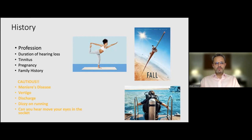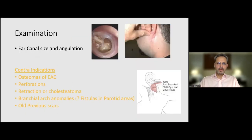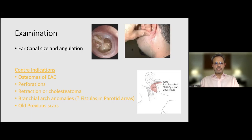If the patient has any symptoms that can give rise to vertigo or dizziness, I would treat it with caution and probably not consider performing a stapes operation because of the long-term risks associated. In examination, it is very important to look at the size of the auditory canal and the angulation, because this helps me decide whether I can safely undertake an endoscopic stapedectomy — my routine practice — or whether I need a permeatal or endaural approach.